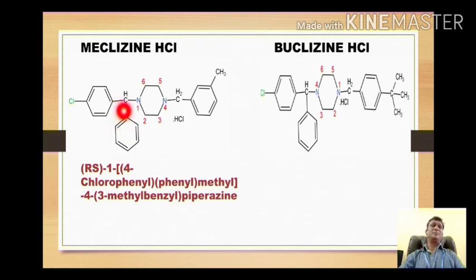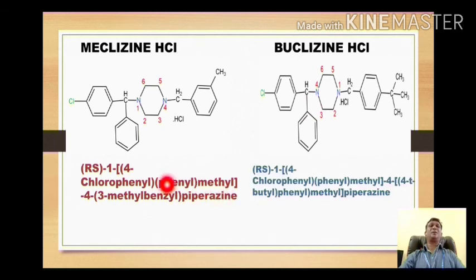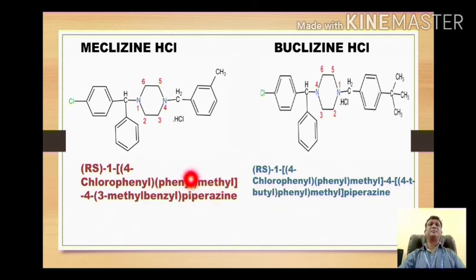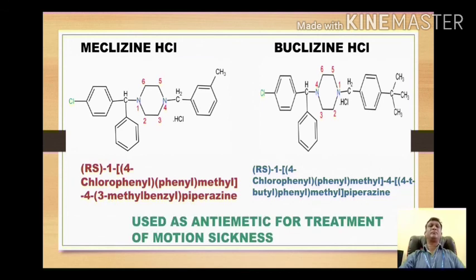Both these compounds contain a chiral carbon. This carbon is attached with four different groups, and likewise the other carbon is also attached with four different groups. That is why the prefix 'RS' is included in the name, standing for the use of the racemic mixture. Whatever meclizine and buclizine is used, they are used in their racemic form. Both of these drugs are used as anti-emetics for treatment of motion sickness.